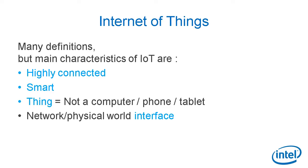Let's try to define Internet of Things, or IoT. There are many definitions, but for me the main characteristics of IoT are: first, highly connected; smart; it has to be a thing — a thing means not a computer, not a phone, not a tablet. And it has to propose a network physical world interface.